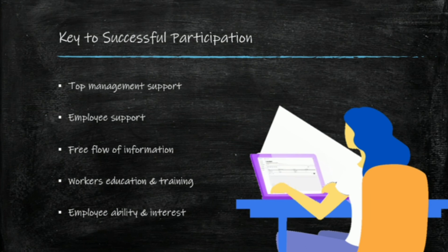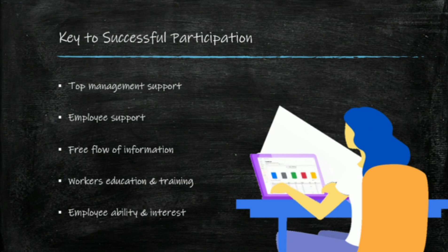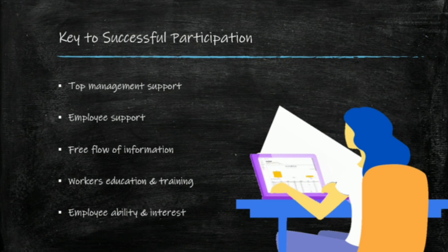There are a few key points to successful participation. First, support from top management. Second, support from employees. Third, free flow of information — since many employees are included in participatory management, everyone must have access to information. Fourth, workers' education and training — employees must have proper education and training relevant to their tasks, otherwise tasks will not be completed properly. Fifth, employee ability and interest — if an employee is interested in participation, then participatory management will be effective.